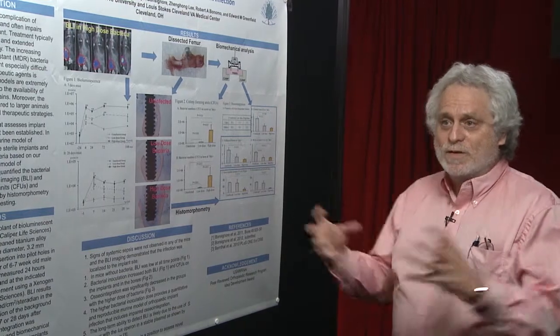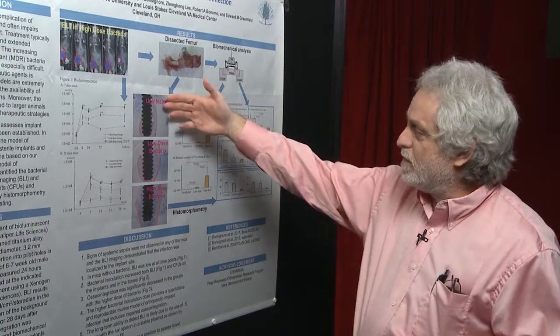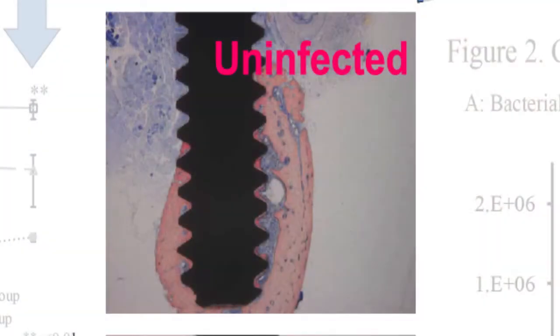With bacteria it takes very little force because there's not very much bone grown around the implant, which you can also see histologically. This is an uninfected implant where there was no bacteria, the bone is grown around that implant, it's holding it in tight.